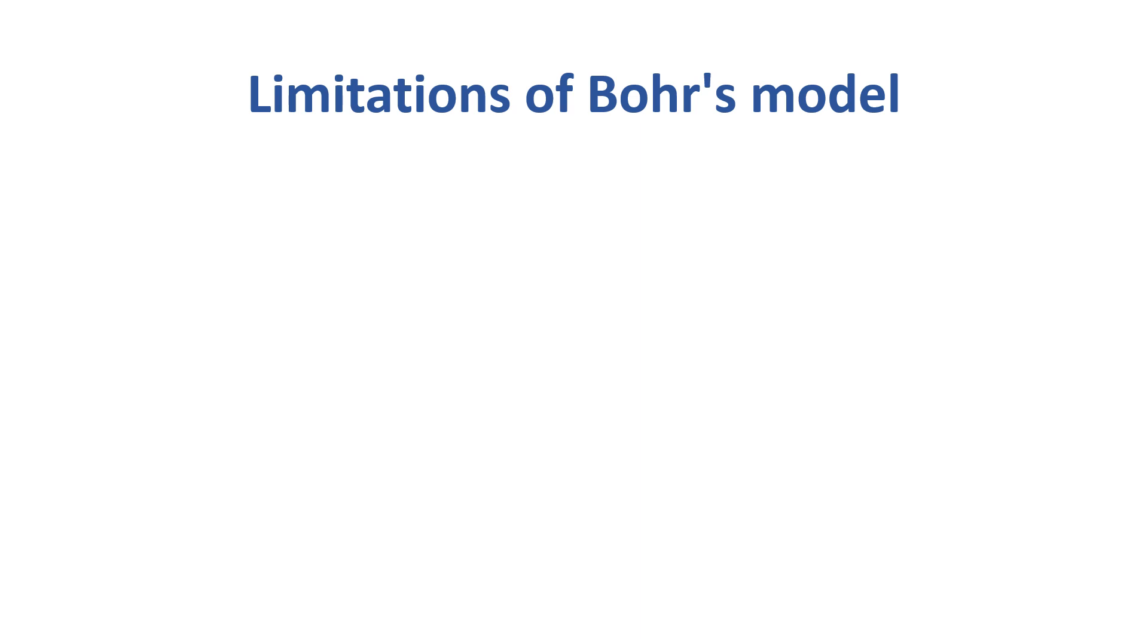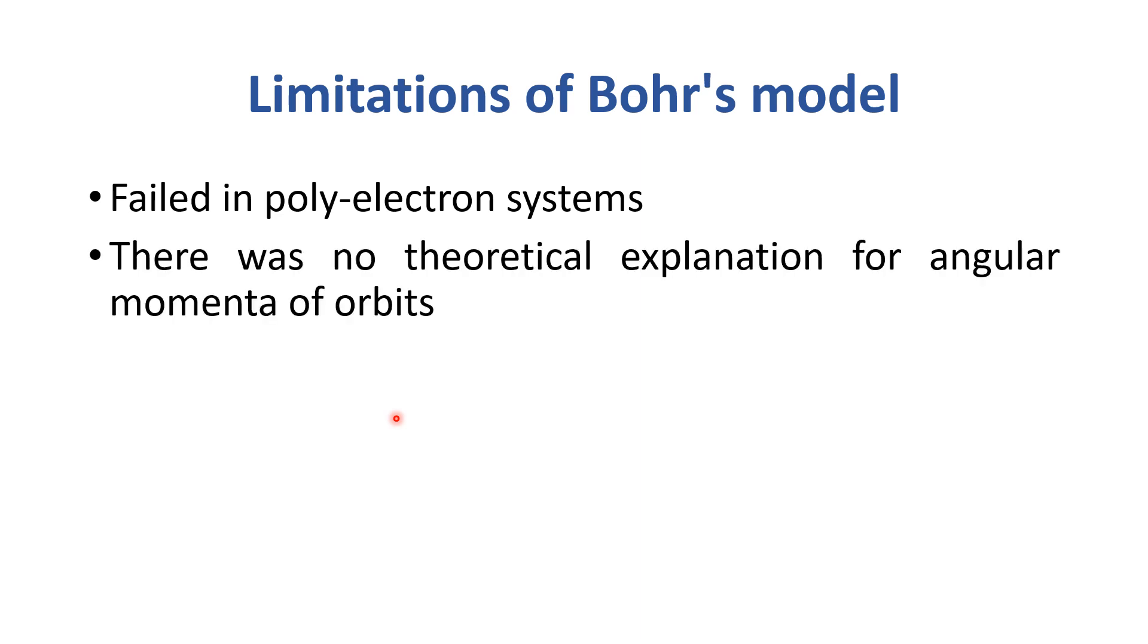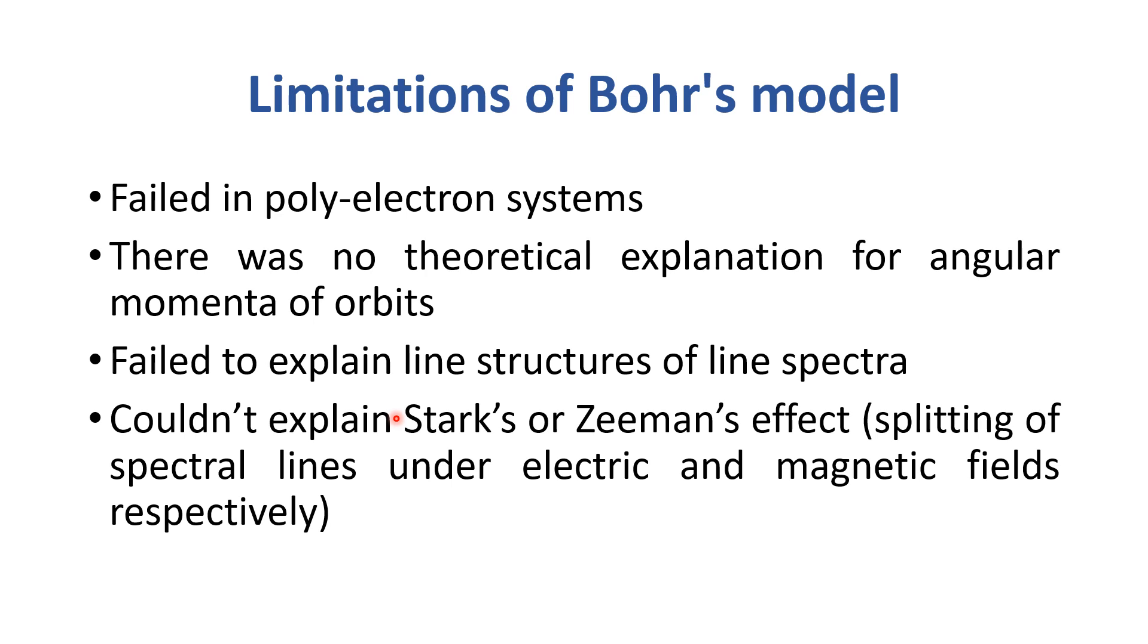And there are limitations of Bohr model. It failed in poly-electron systems. There was no theoretical explanation for angular momenta of orbits. And it failed to explain line structures of line spectra. This means Stark or Zeeman effect could not be explained.